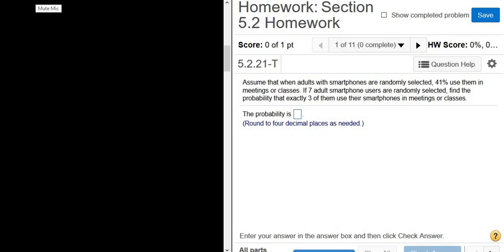Assume that when adults with smartphones are randomly selected, 41% use them in meetings or classes. If seven adult smartphone users are randomly selected, find the probability that exactly three of them use their smartphones in meetings or classes.